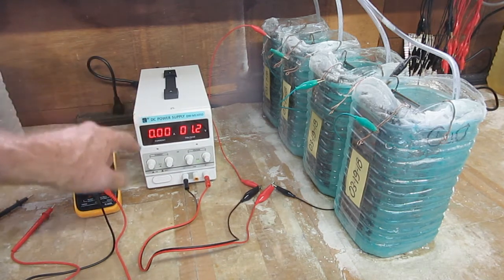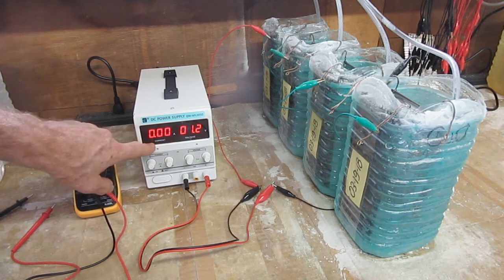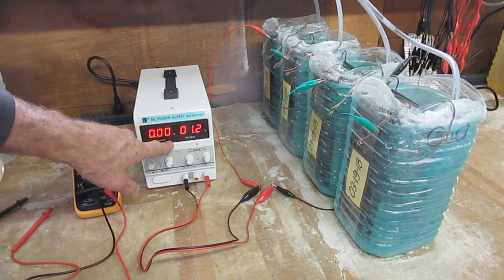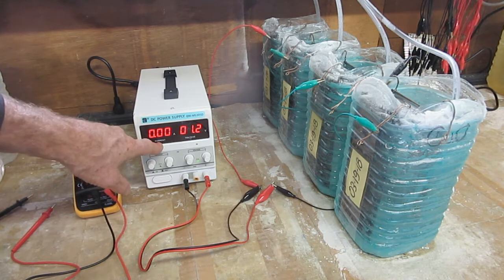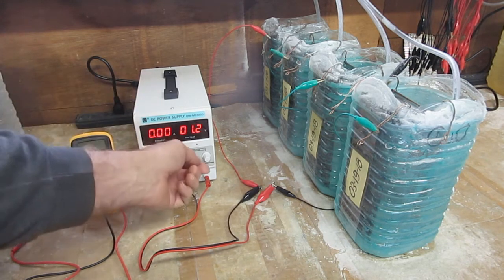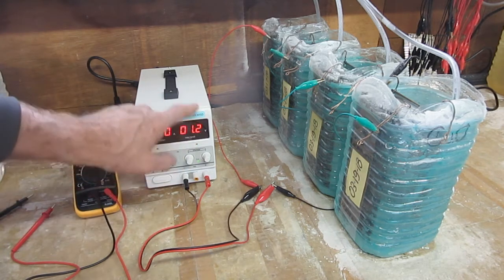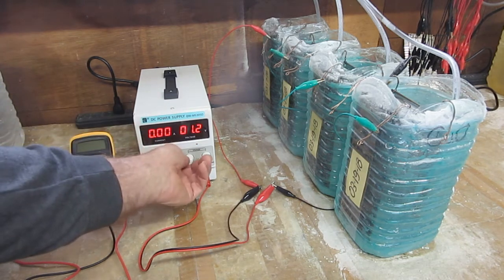It's only rated on the current here to go down as low as one one-hundredth of an amp. The current is displayed in amps and it says 0.00. The lowest value that you can get on the current with this power supply is one one-hundredth of an amp.